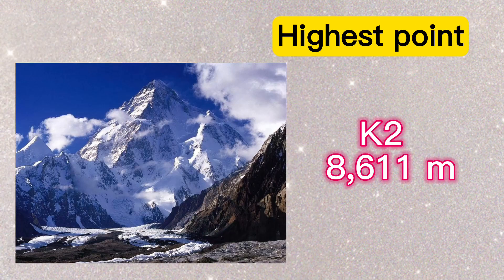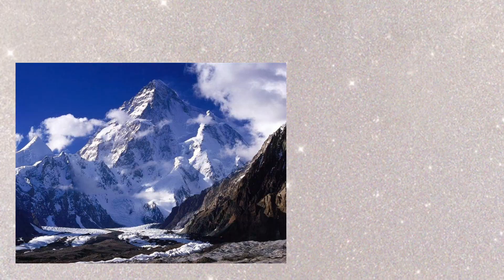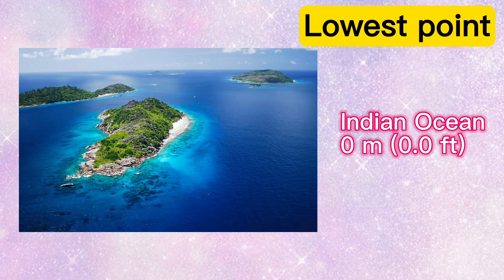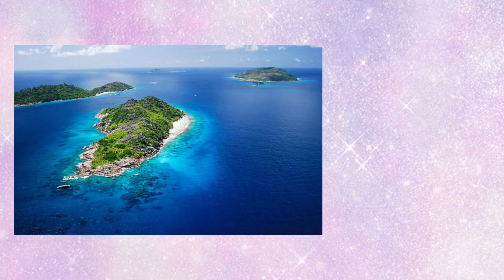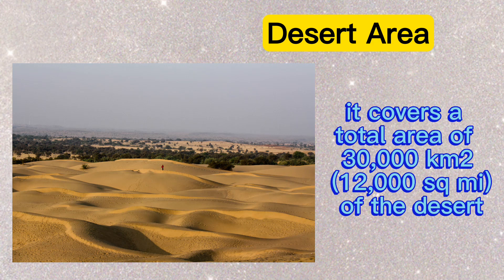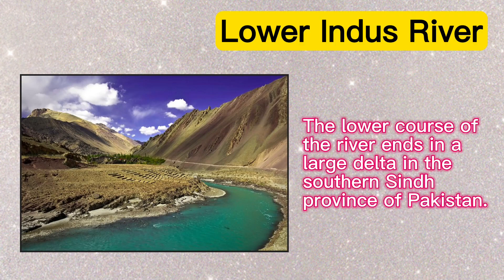Highest point: 8,611 meters. Lowest point: the Indian Ocean at 0 meters, 0.0 feet. Desert area covers a total area of 30,000 square kilometers, or 12,000 square miles, of desert along the lower Indus River.